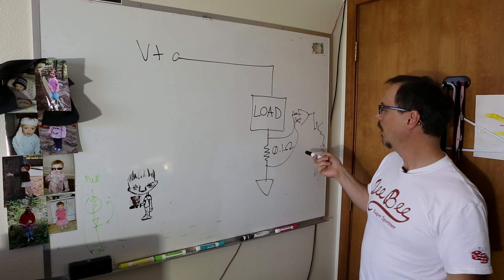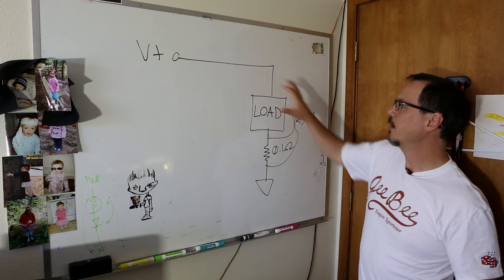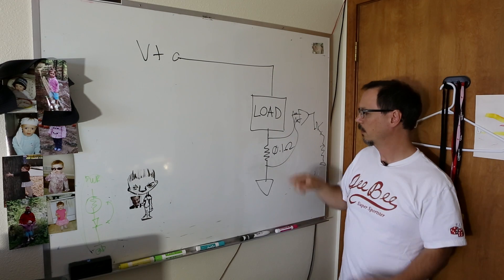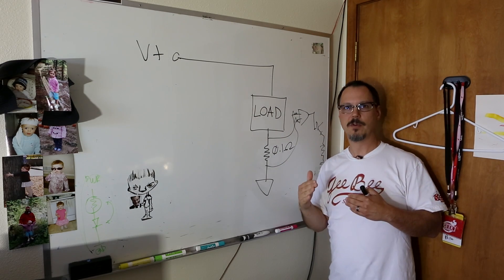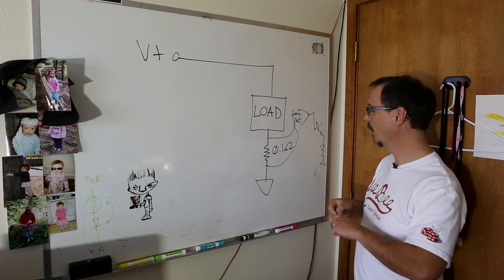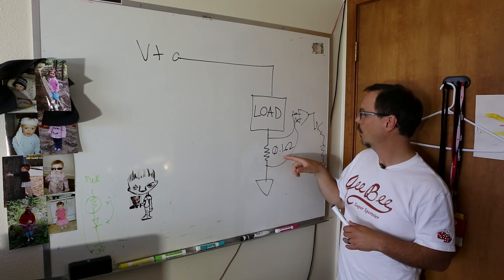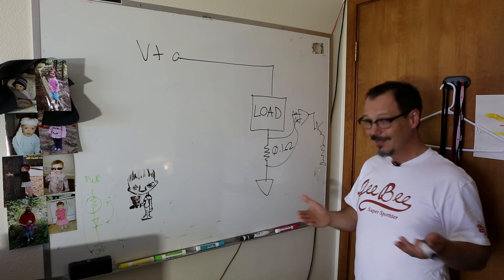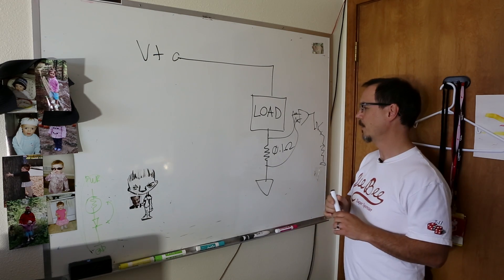The problem with this is that if you're sensing a really large current, this resistor will create a much larger voltage than you might want to have between your load and ground. Like for example, a 0.1 ohm resistor will generate, at 10 amps, it'll generate a volt of noise. A lot of times that's not acceptable.